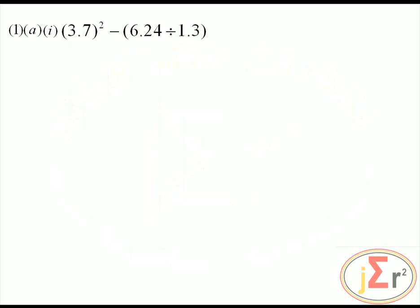We have the instruction that we may use a calculator or otherwise to determine the exact value of the expression. In making calculations, those enclosed in brackets take precedence, so the operations inside the brackets will be carried out first. We may square 3.7 and also divide 6.24 by 1.3.